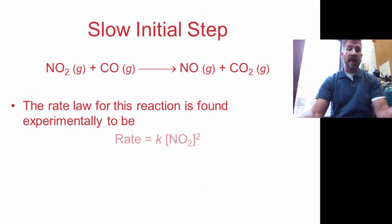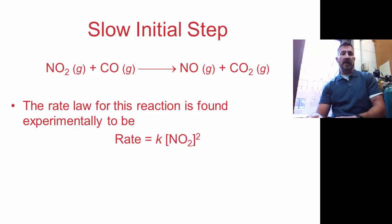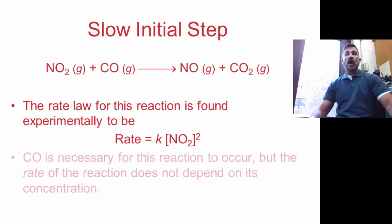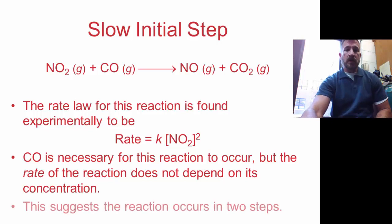So we're going to look at two reactions. This is the first one. You've seen this reaction before. Actually we found the order for this reaction using a different process. Today we're going to do it using the mechanism. The rate law for this reaction is found to be rate equals K times the concentration of nitrogen dioxide squared. Notice carbon monoxide is not included in this. Carbon monoxide is necessary for this reaction to occur, but the rate does not depend on its concentration.